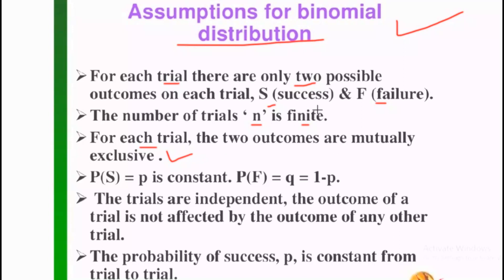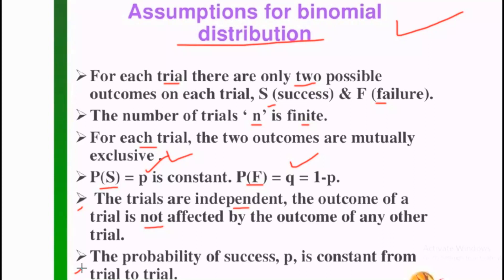The two outcomes — success or failure — are mutually exclusive. Success and failure cannot happen at the same time. The probability of success is constant, and the probability of failure is also constant. The fifth assumption is that the trials are independent — the outcome of one trial is not affected by the outcome of any other trial. The probability of success p remains constant from trial to trial. With these assumptions, the binomial distribution is valid.